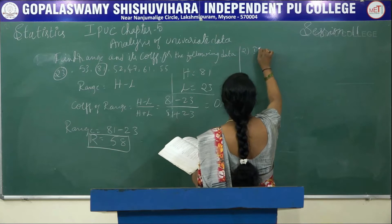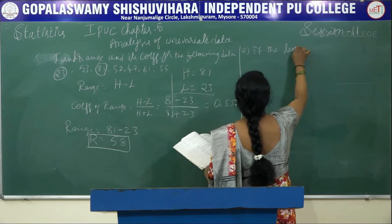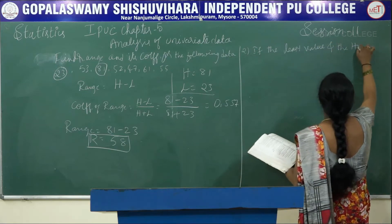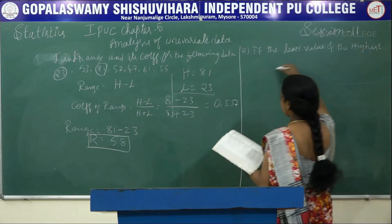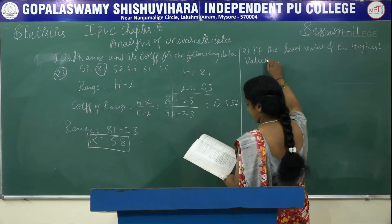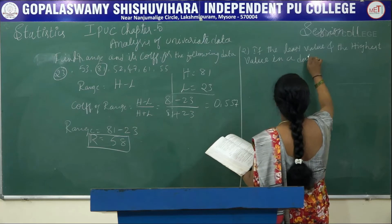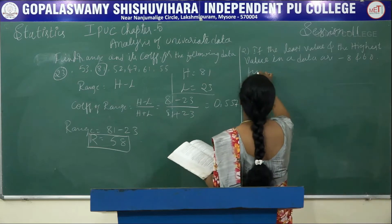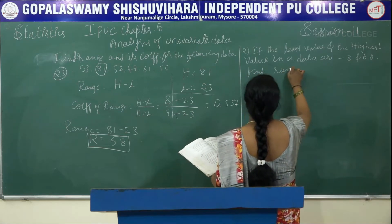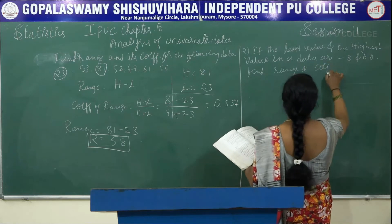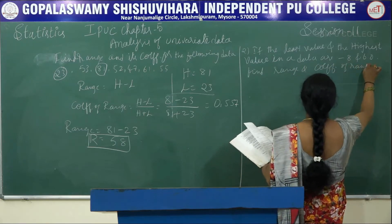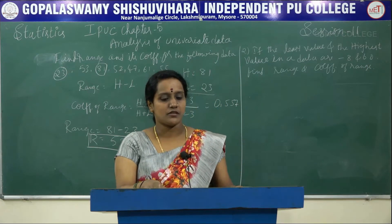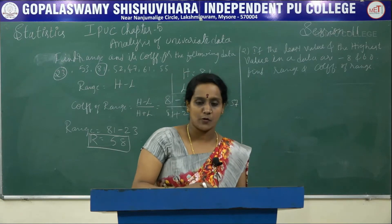Next problem: if the least value and the highest value in a data are minus 8 and 60, find the range and coefficient of range.